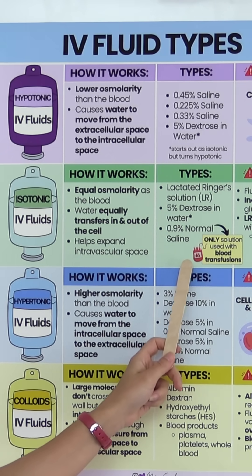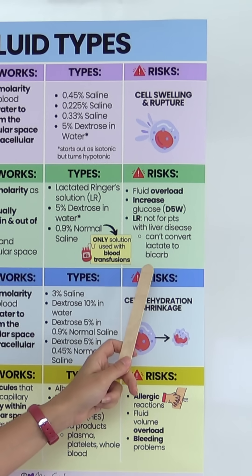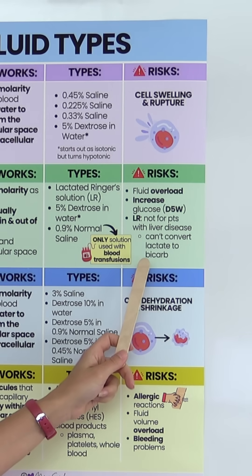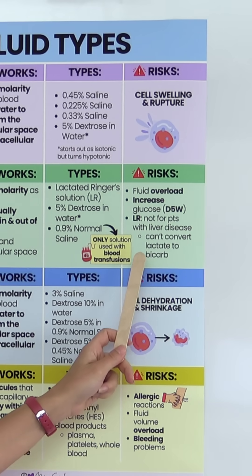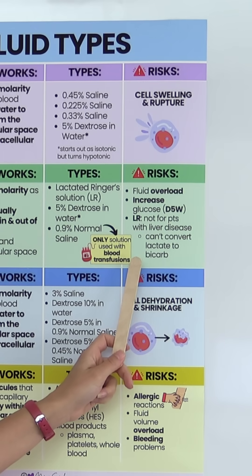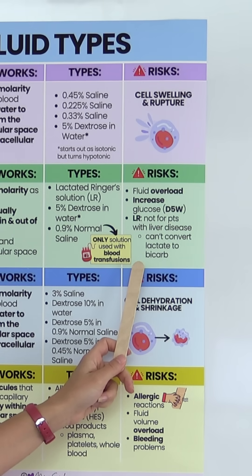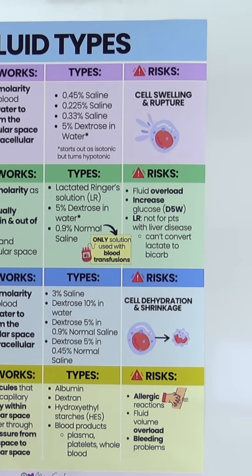Here are the types, and the risks include fluid volume overload. It can increase glucose, like with D5W, and with LR it's not for patients with liver disease because they can't convert lactate to bicarb.